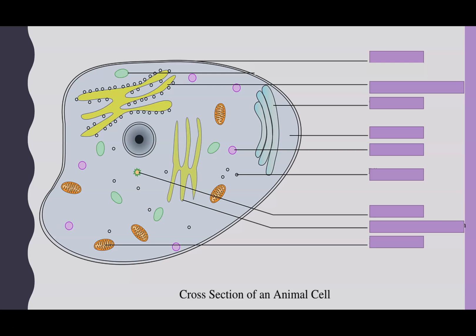First, we're going to see how much you already know, or if this is revision, how much you can remember. See how many of the purple boxes you can identify as organelles in an animal cell. The top one is our cell membrane. Now although this actually looks like there are two layers, suggesting two types of membranes, it is actually just one single layer. In animal cells, the only external layer is the cell surface membrane.